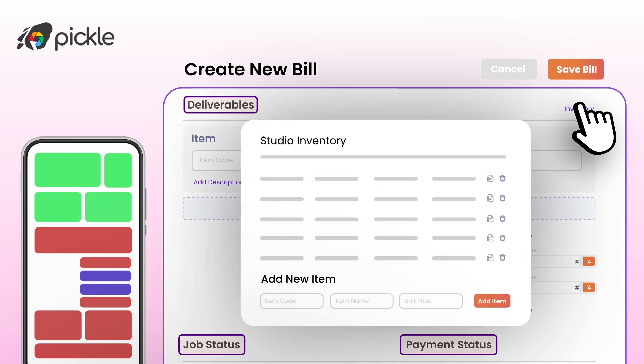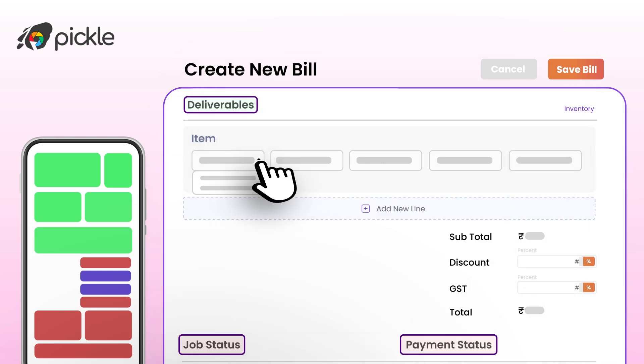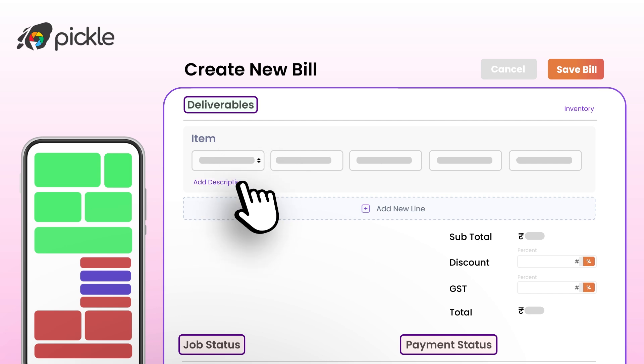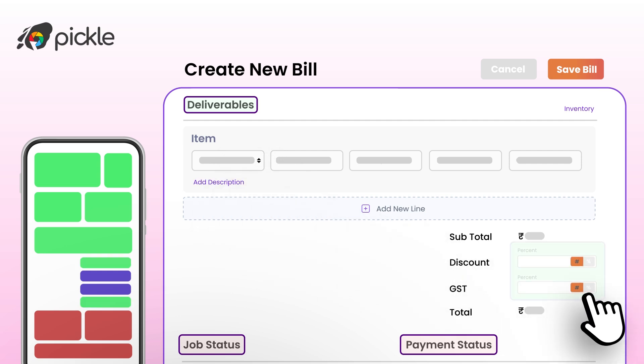Alter the rate, quantity, and price as required. You can add one or more such services. Set the GST and discount in the form of a value or percentage.